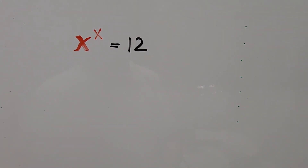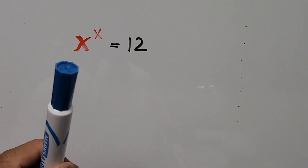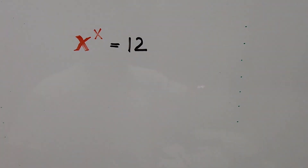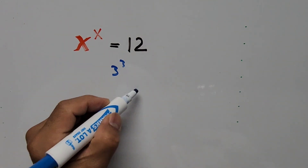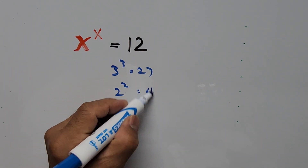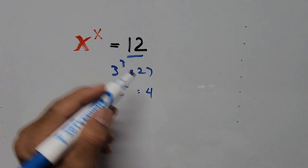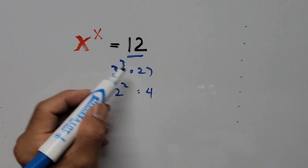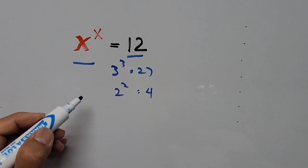Is there any way to express the constant 12 on the right hand side in exponential form where the base equals the exponent? For example, 3 to the power of 3 is 27, and 2 to the power of 2 is 4, so there's no way to express 12 with a base equal to its exponent as we have on the left hand side.